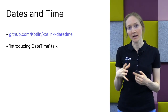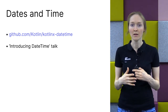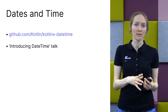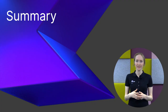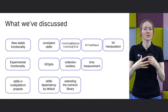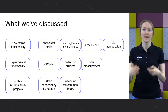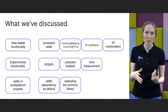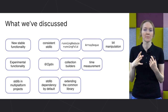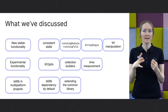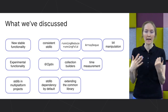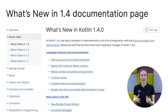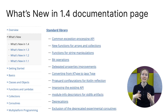The Kotlin kotlinx.datetime library provides an API for working with dates and times — check out the 'Introducing Datetime' talk by my colleague Ilya Gorbunov, also the author of many of the standard library changes we've discussed today. We've covered a lot: new functionality in the standard library available in Kotlin 1.4, naming conventions, new runningFold and runningReduce functions, the new ArrayDeque type, operations for bit manipulation, using the standard library in multiplatform projects with automatic dependency inclusion, and experimental features including collection builders and the time measurement API.